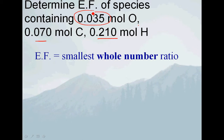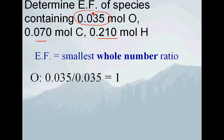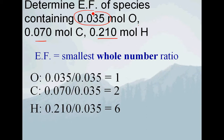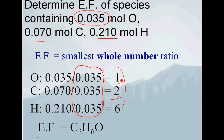We take each number of moles and divide by the smallest number. For oxygen, 0.035 divided by 0.035 is roughly 1; carbon is roughly 2; and hydrogen is roughly 6. We're dividing by the same number, so that's okay. We're trying to find the smallest whole number ratio, and that gives us 2 carbons, 6 hydrogens, and 1 oxygen as our empirical formula. The order in which we list the elements really doesn't make any difference.